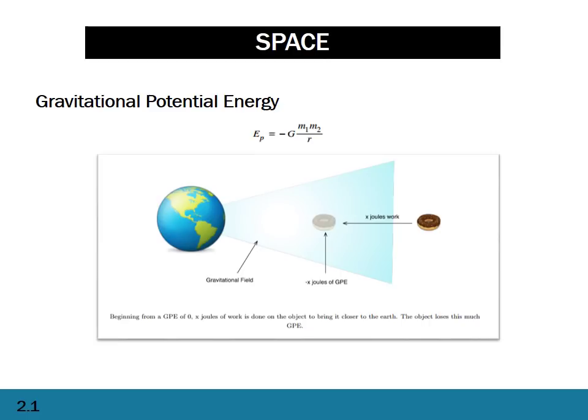We first start off with the concept of gravitational potential energy. Now you've used this formula and answered questions with it time and time again, so basically all I want to talk about now is the negative sign, the sign in front of the gravitational potential energy formula. It's really important to understand why there's this negative sign here — there are many questions about it, particularly multiple choice.